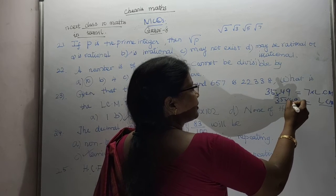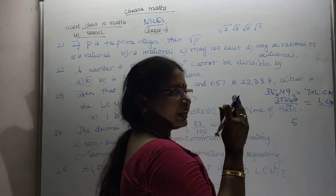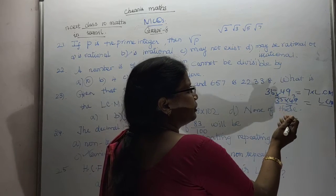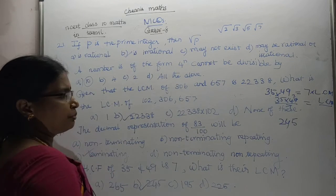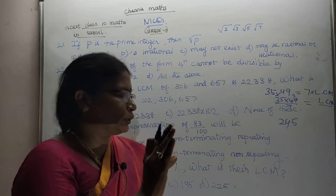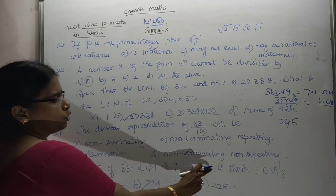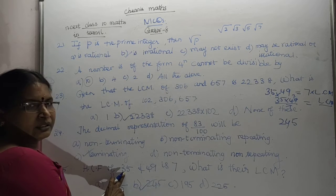7 tables. Then 7, 3 is 21. 21 plus 3, 24. 245 is the answer. What is the formula? Product of the numbers is equal to LCM into HCF. How do we get it? 2 numbers, 2 numbers is equal to LCM or HCF.